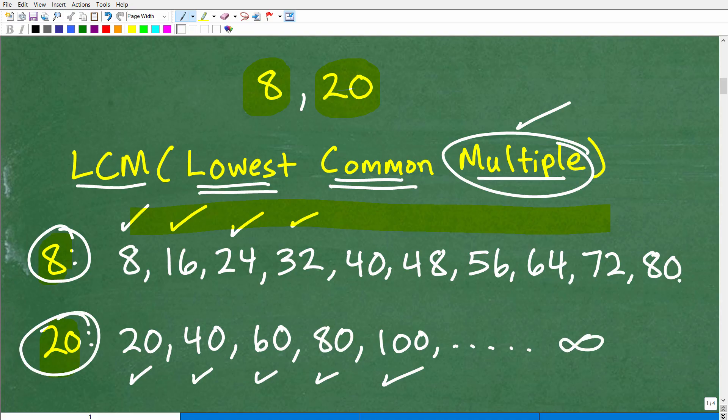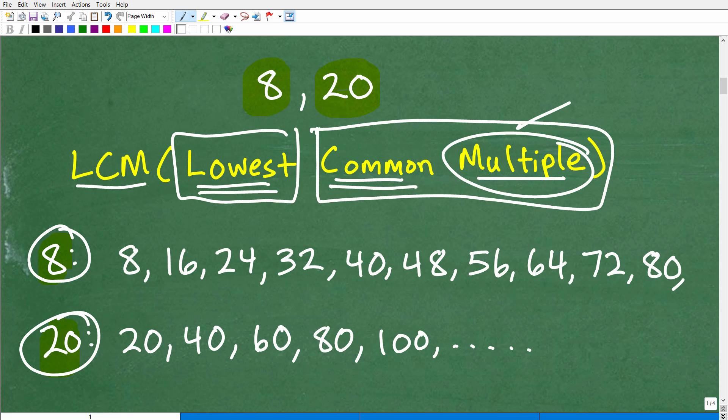And this goes on infinitely. We could continue to go on and on and write multiples out. But I wanted to show you what a multiple is by writing out this list of multiples. Now let's find the lowest common multiple.